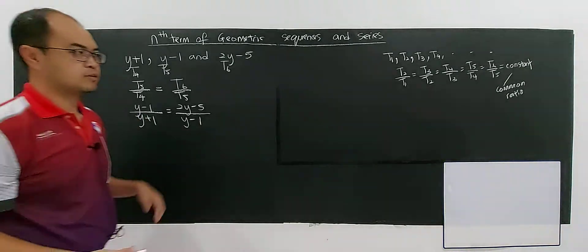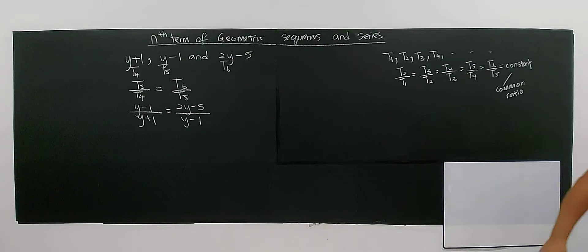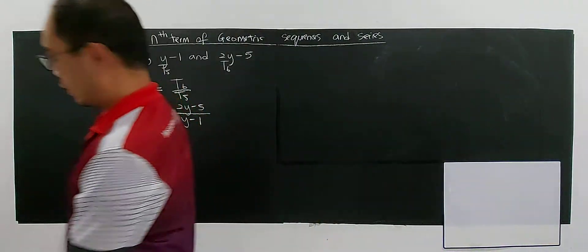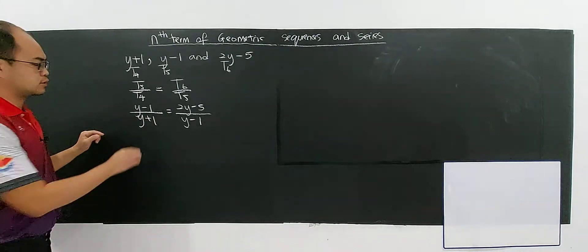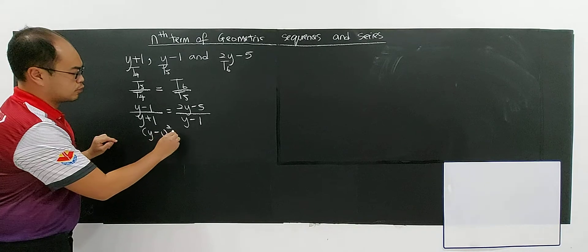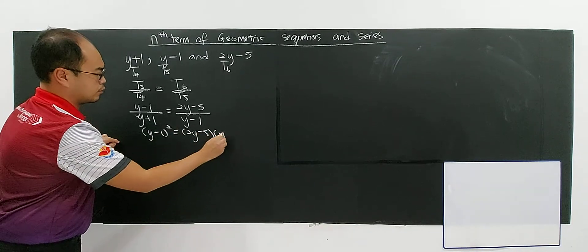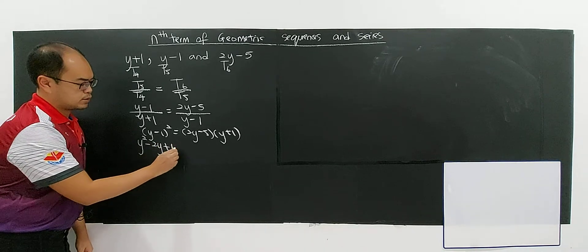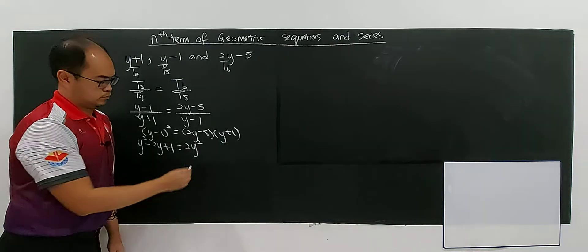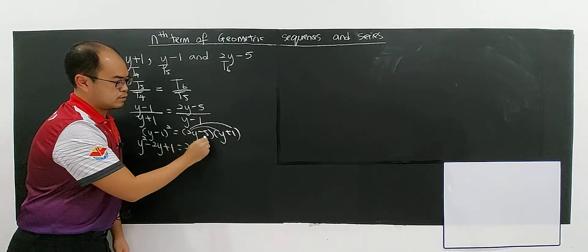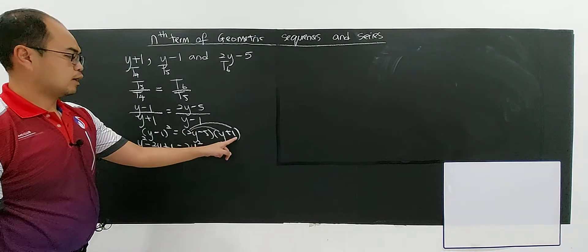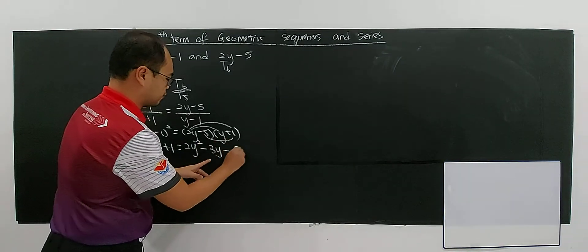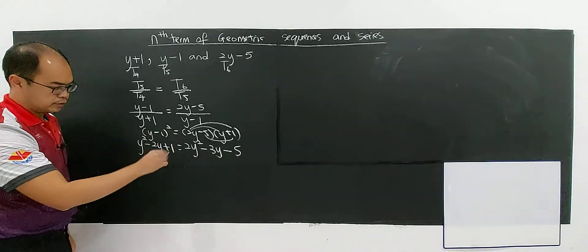This is the most important thing that you must figure out when you have this type of question. So let's look at how to solve this. This will not be a problem because you just use algebra — you cross multiply. You have y minus 1 squared equals 2y minus 5 times y plus 1. So you have y² minus 2y plus 1, and on the right side you have 2y² minus 3y minus 5.